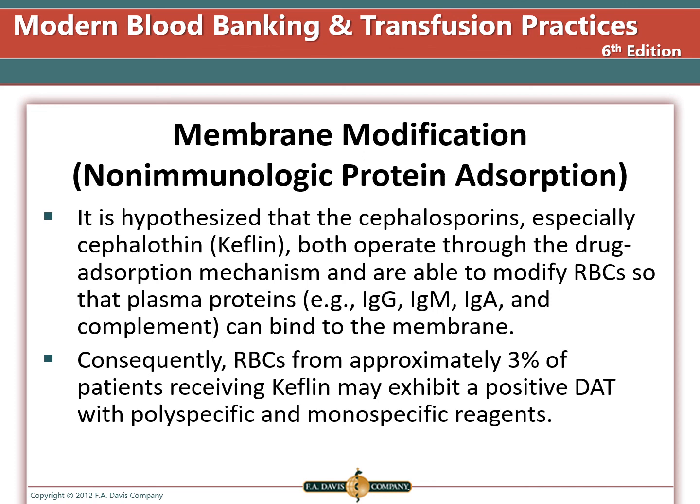Investigation should begin with a DAT panel using polyspecific anti-human globulin reagent, then monospecific anti-human globulin reagent if necessary. Screen the patient serum for red blood cell alloantibodies. If necessary, perform an elution and test the eluate for red blood cell antibodies, especially if the patient has been recently transfused. Thank you for listening to this presentation.